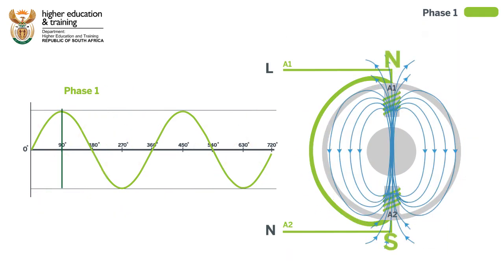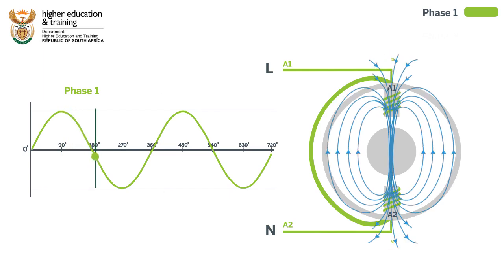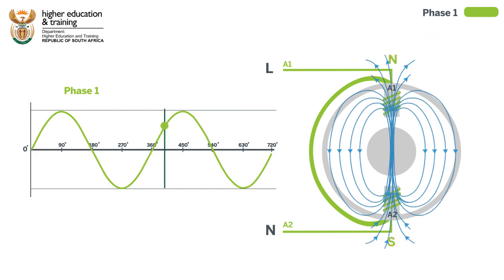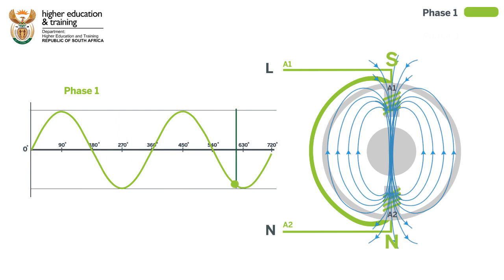With single-phase power, there is no second or third phase that is shifted out to produce this rotation. As the current alternates, all that happens is that the polarity of the stator field flips. There is no rotation for the rotor to follow.